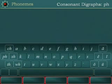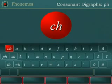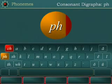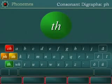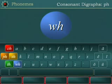Consonant Digraphs: Ch as in Cheetah, Ph as in Dolphin, Sh as in Shark, Th as in Moth, Wh as in Whale.